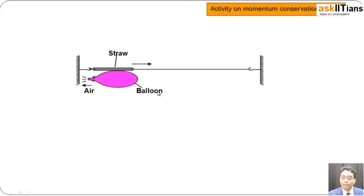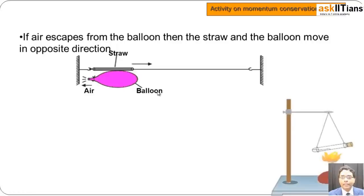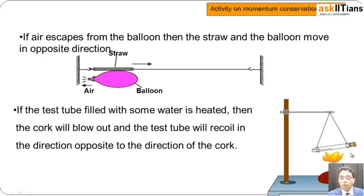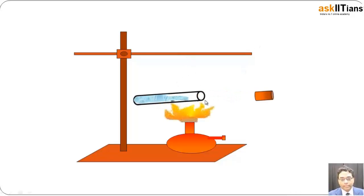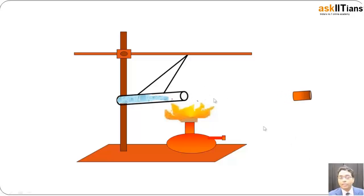In a similar way, if we fill a test tube with some water and start heating it, what is going to happen? The cork is going to come out. When the cork comes out, there is conservation of momentum because you did not apply any external force. The cork comes out, the test tube moves in the opposite direction, thereby making the momentum conserved in this whole system.